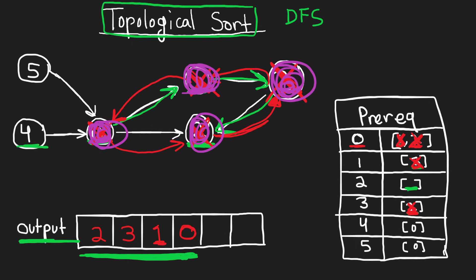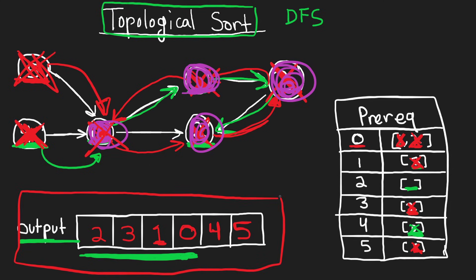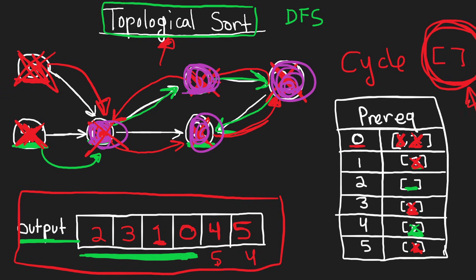This is the topological sort of this graph. The topological sort is not necessarily unique — for example, four and five could have been in either order. We also know that if we detect any cycles, we have to return an empty list because a topological sort is not even possible.